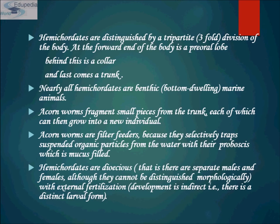Hemichordata share several features that link the classes together. First, all hemichordata have a threefold division. All hemichordata also have pharyngeal slits, or gill slits, that open into the pharynx. Corn worms have up to 200 of these, while pterobranches have only one.